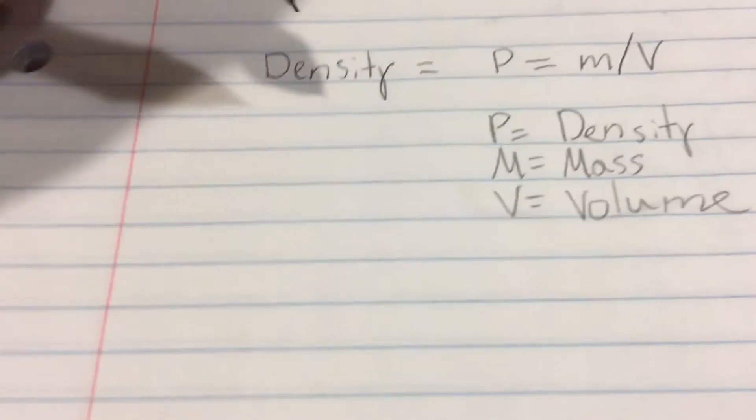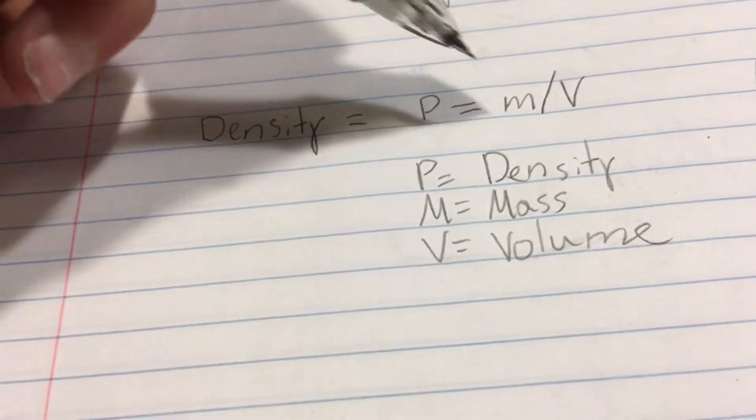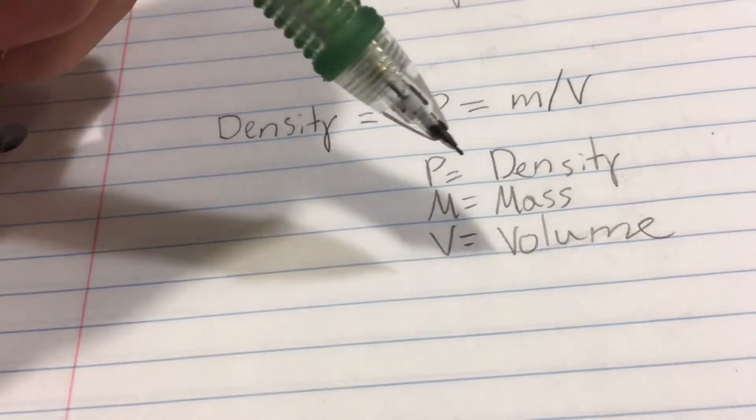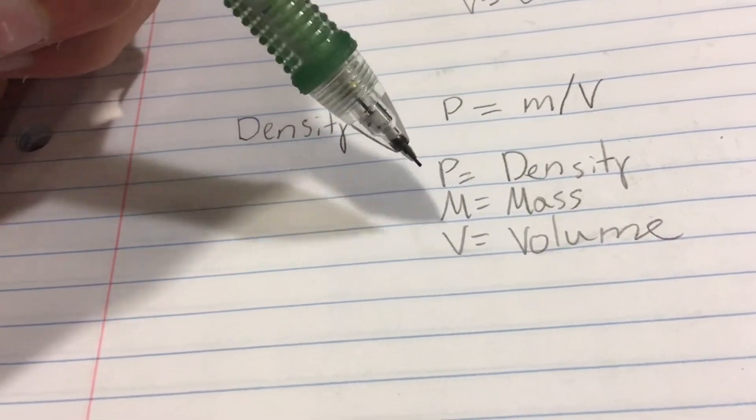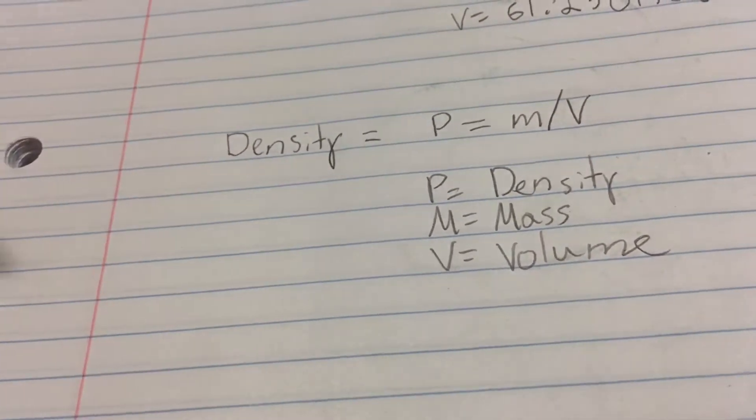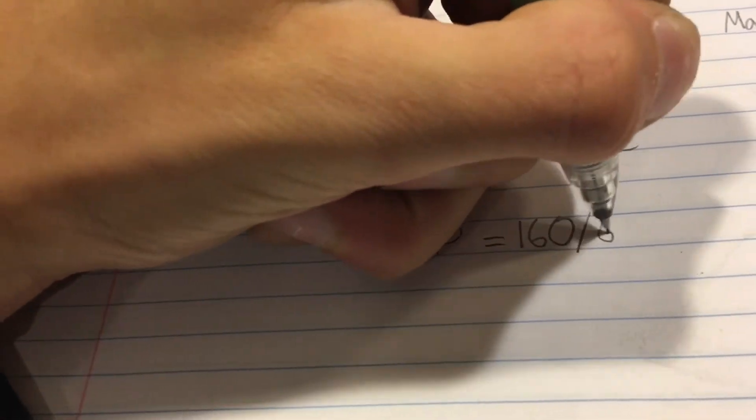And the formula for density is ρ equals m divided by V. ρ is density, m is mass, and V is volume. So to use this formula, you want to do ρ equals 160 divided by our very long volume number.